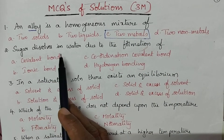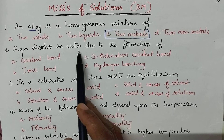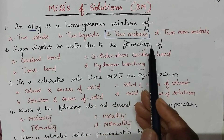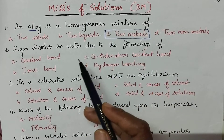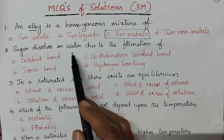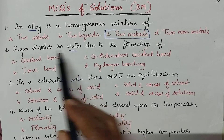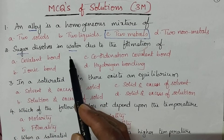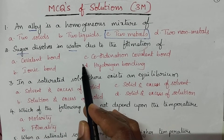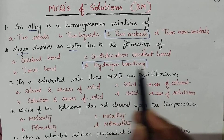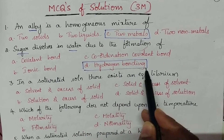Sugar dissolves in water due to the formation of hydrogen bonding. Whenever sugar is placed in water, it dissolves due to the formation of hydrogen bonding.